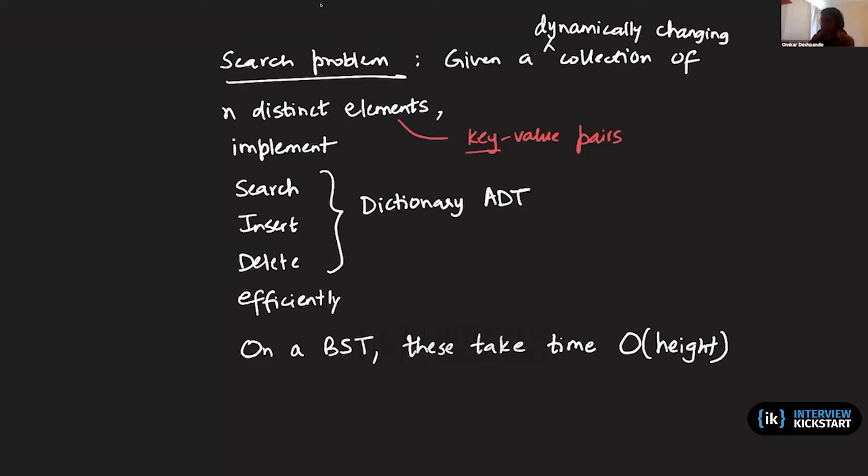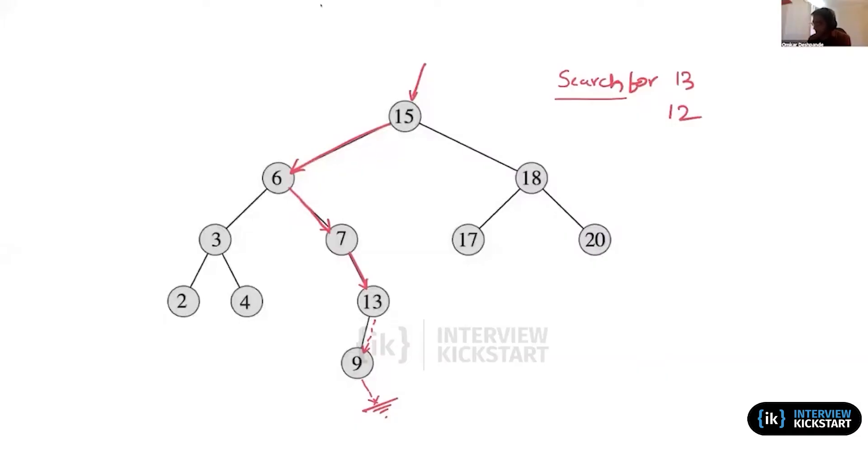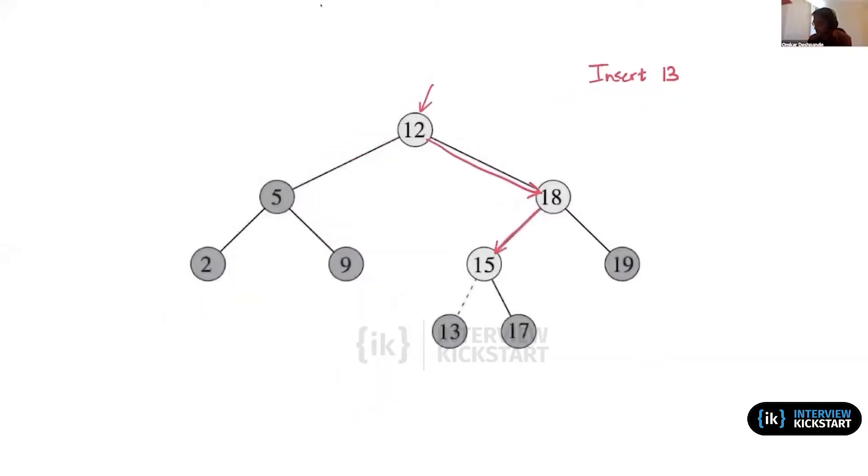Since 13 is not there, we know we have converged on the place where it should have existed if it was in the tree. That is the point where we insert the node 13. So we always insert a new node as a leaf in the binary search tree. That's what we did in the foundations.